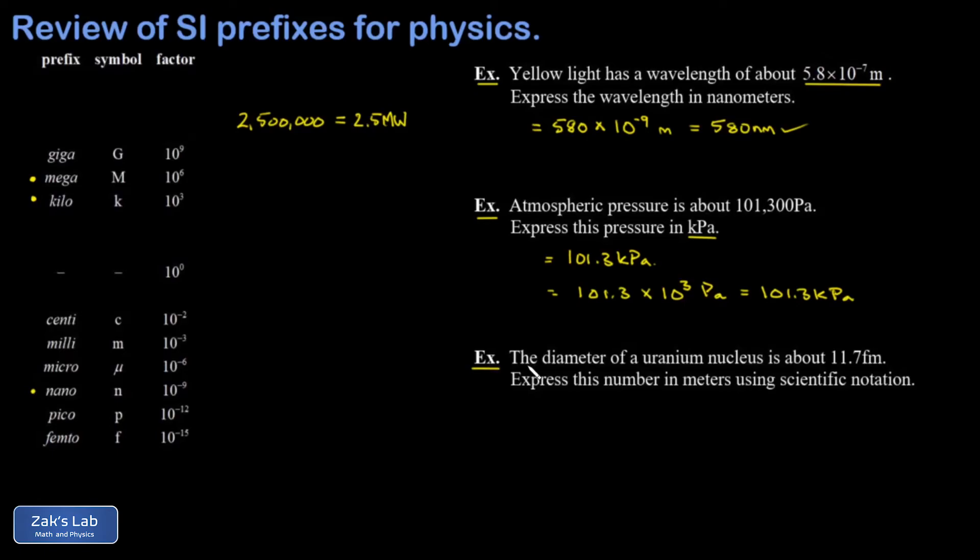In the final example, we're given that the diameter of a uranium nucleus is about 11.7 femtometers. And the diameter of a nucleus is about as small as we go in introductory physics. And we're asked to express this in scientific notation. So 11.7 femtometers is the same as 11.7 times 10 to the negative 15 meters.